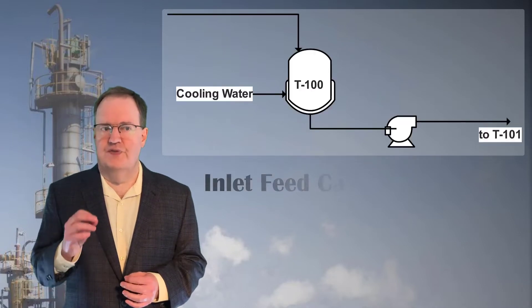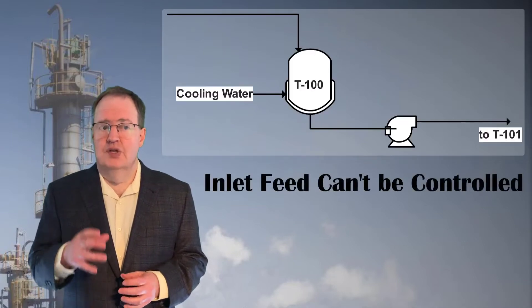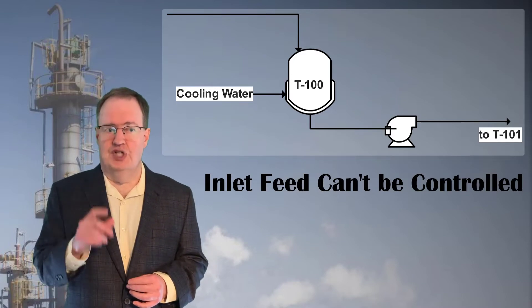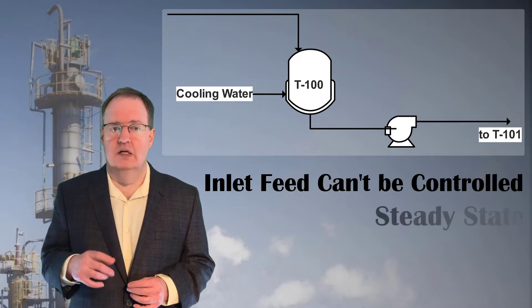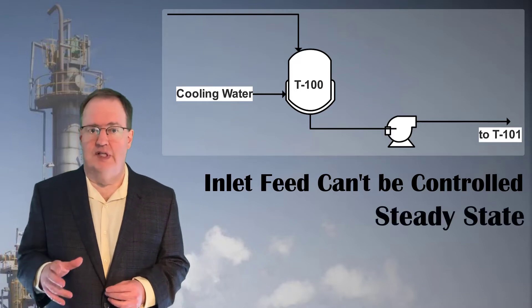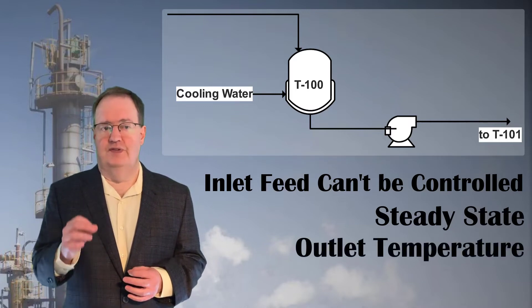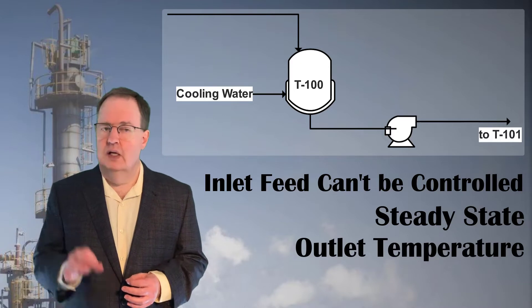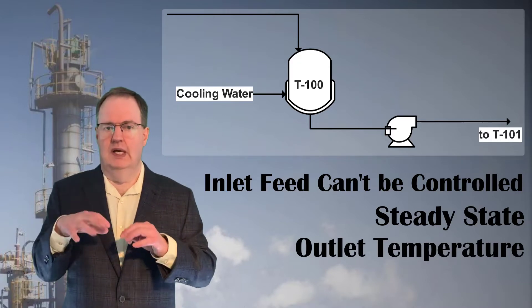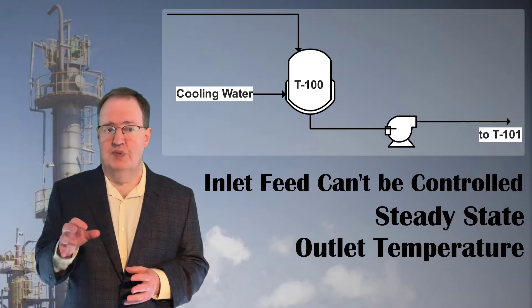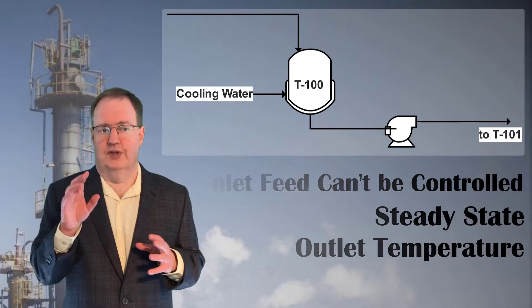Let's look at an example. T100 is the bottoms receiver of a distillation column. It is fed at a variable rate that we can't control, so this unit needs to react to that changing flow. The objectives for this unit are to maintain steady state by holding a 50% level in T100, and to cool the fluid so that the feed to T101 is at 50 degrees C. Pause the video here and try to write a design for this solution yourself. Note that the pump is single speed, so flow control should be accomplished with control valves.